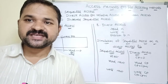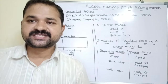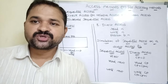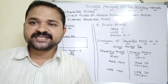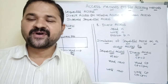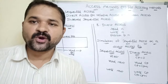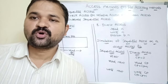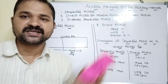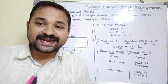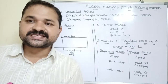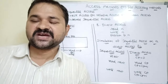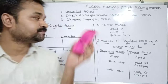Now let's see about the access methods, or file access methods. A file is a collection of related information which is stored in the secondary storage device such as a hard disk. If you take an employee file, it contains information about employees; if you take a customer file, it contains information about the customer. In order to access the information present in the file, there are three methods available.